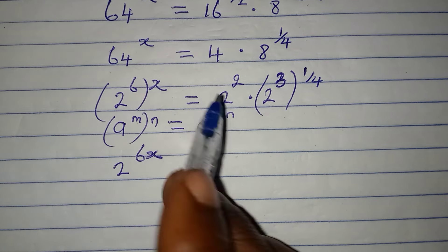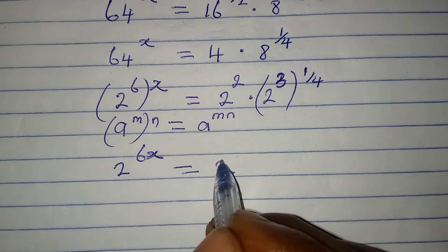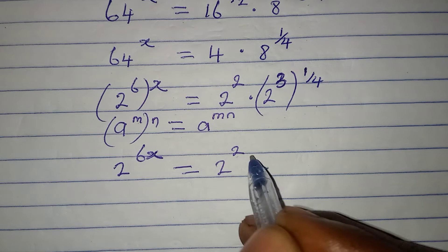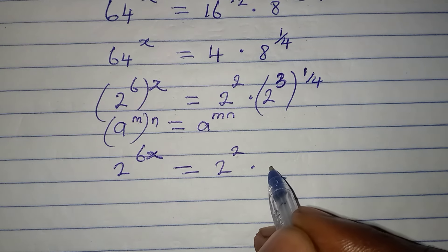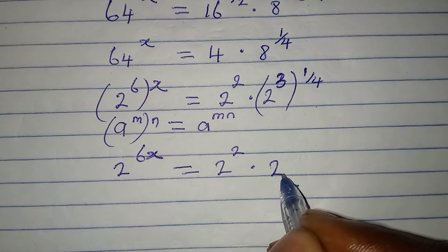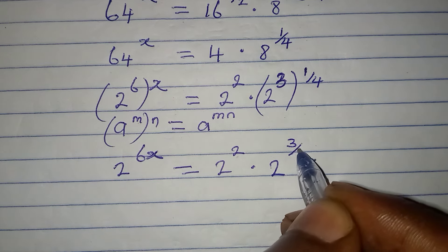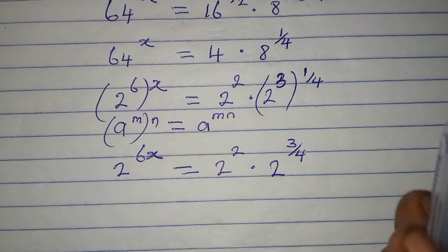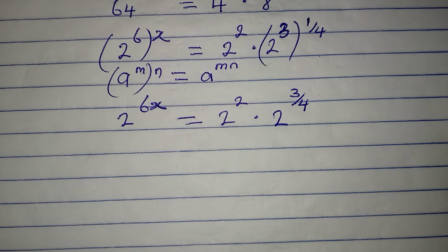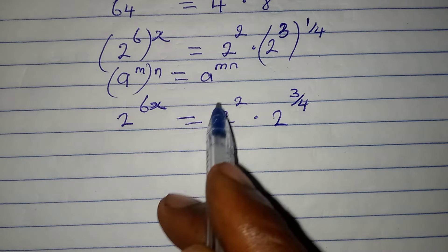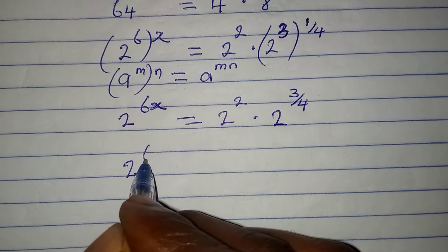This is equal to 2 to the power of 2 multiplied by... doing the same thing on the right side, I will have 2 to the power of 3 over 4, since I have to multiply the powers. Now I want to work on the right-hand side.